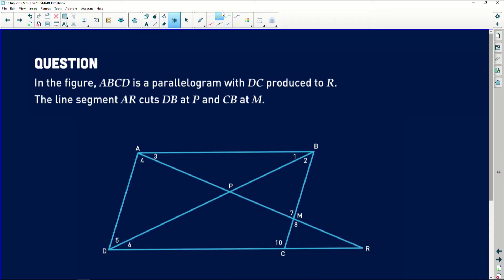In the figure, ABCD is a parallelogram. The importance of reading the label. A parallelogram, opposite sides are parallel. Clearly, I'm going to indicate that off the bat. By looking at the question, I know that opposite sides are going to be parallel. With DC produced to R, the line segment AR cuts DB at P and CB at point M.